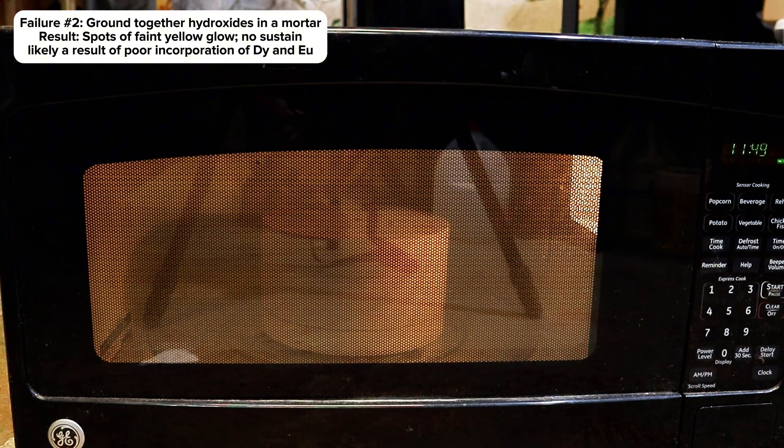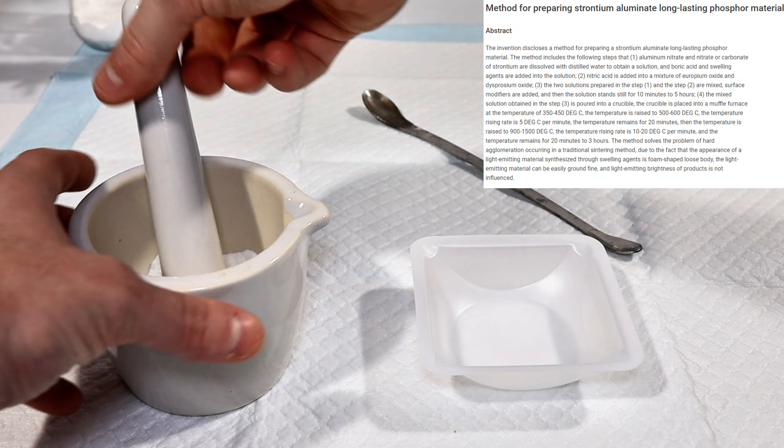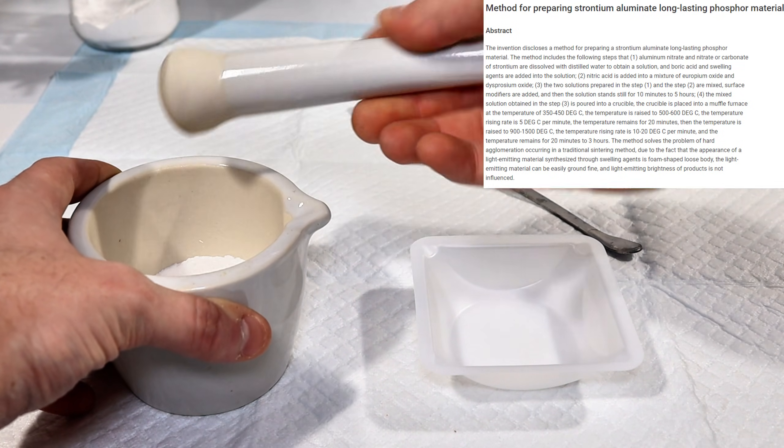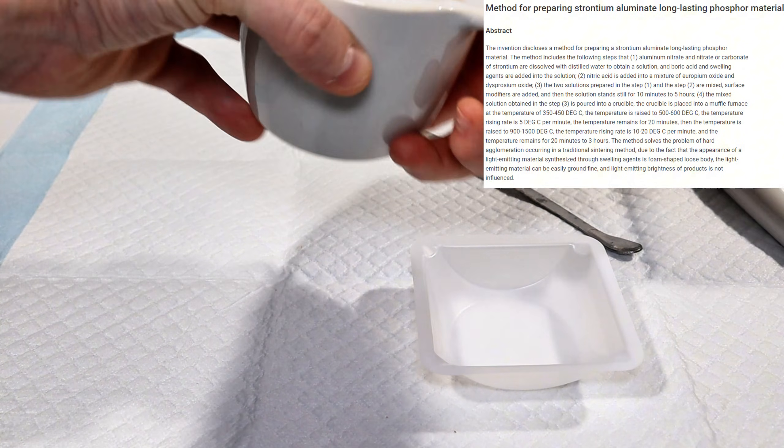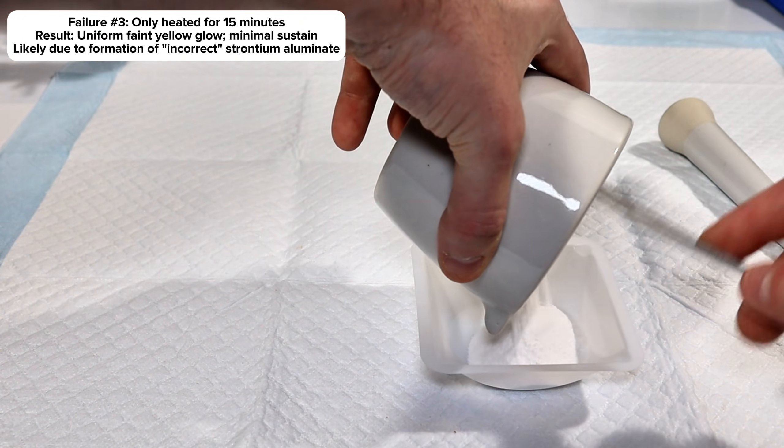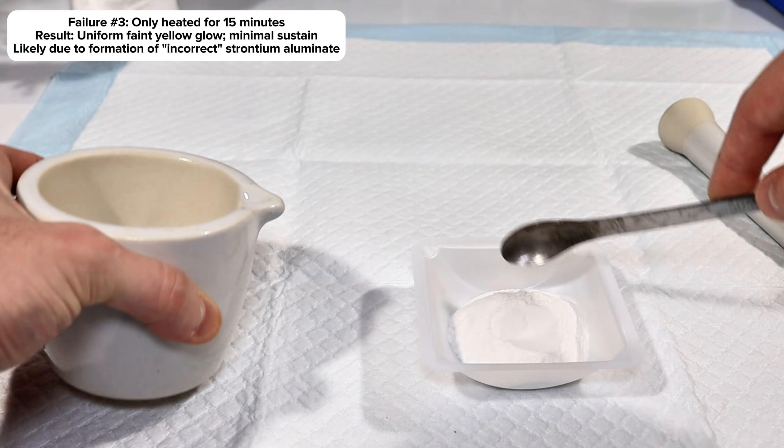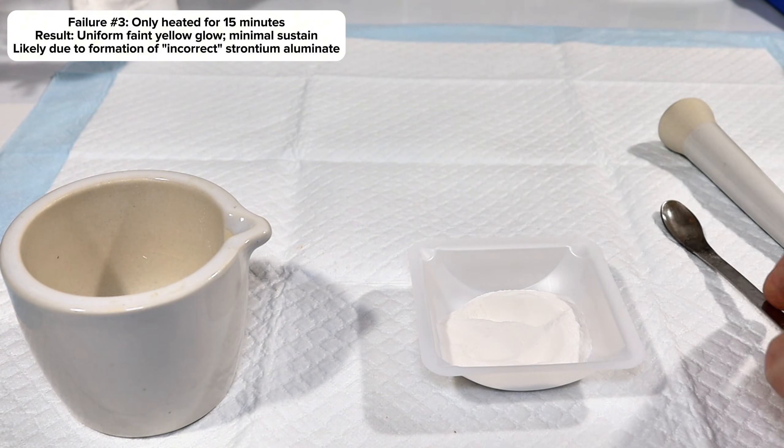This led me to eventually find a patent which described the production of strontium aluminate by the decomposition of nitrate salts, which is the method I show in the video. My third and final failure was essentially doing everything exactly as I've shown, but firing the salt mass for the previously mentioned 15 minutes rather than the 30 minutes I used for my successful run.